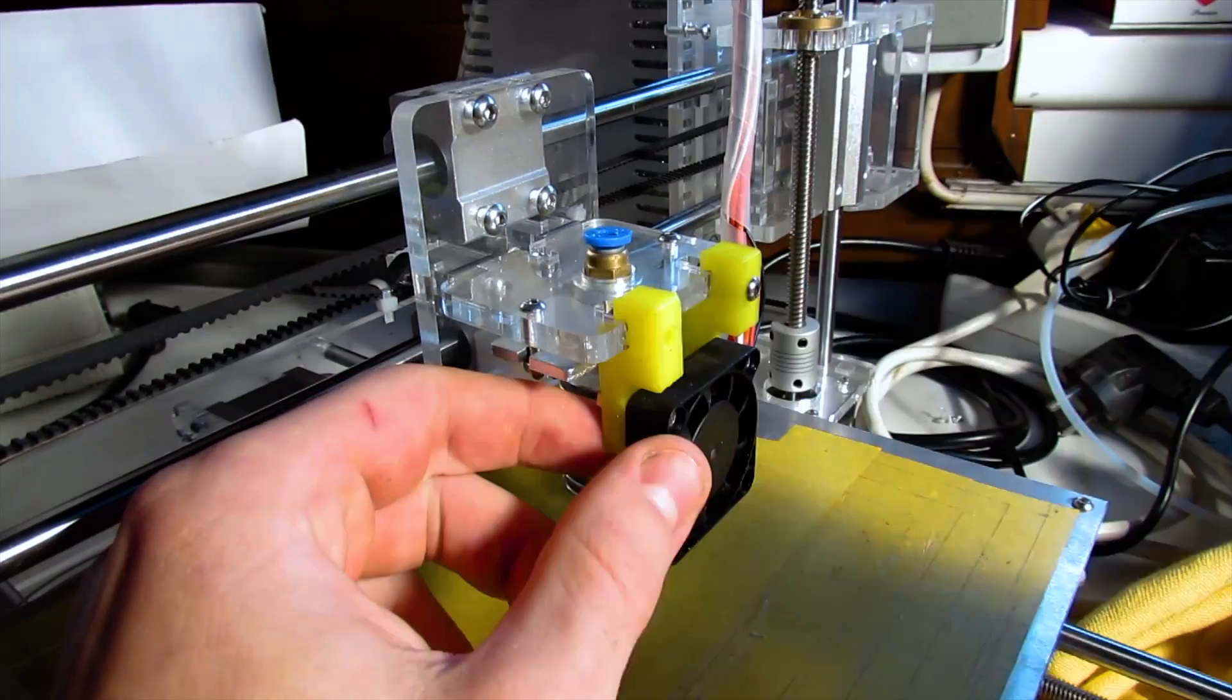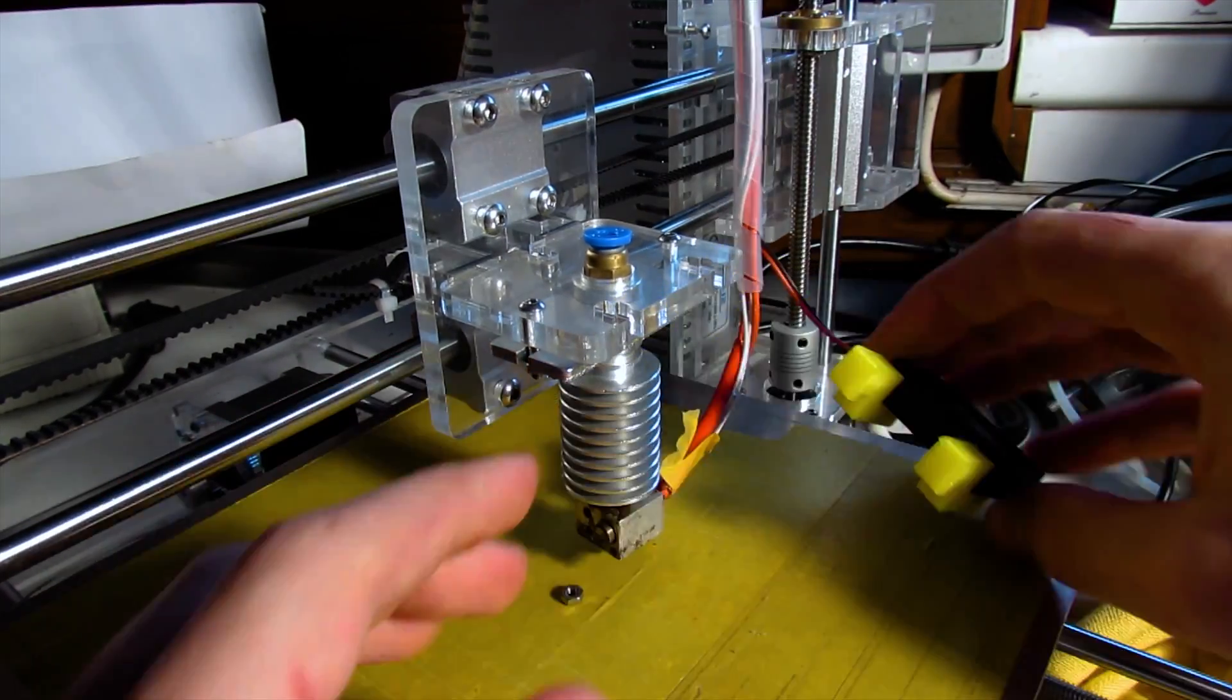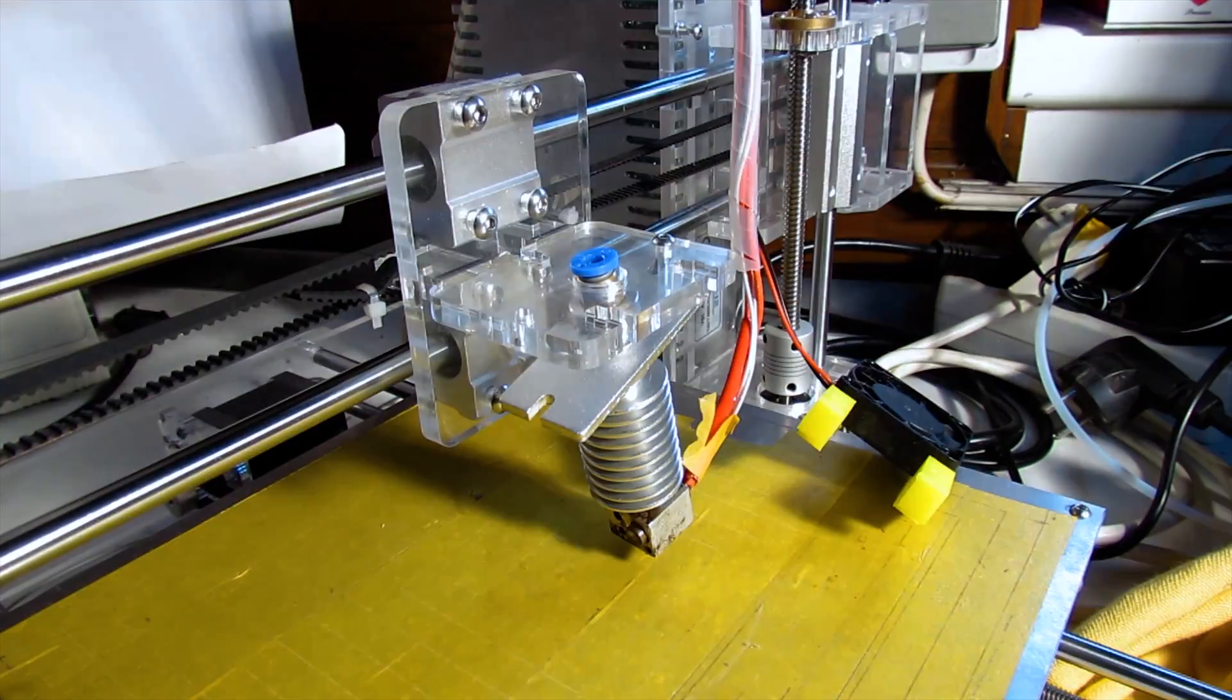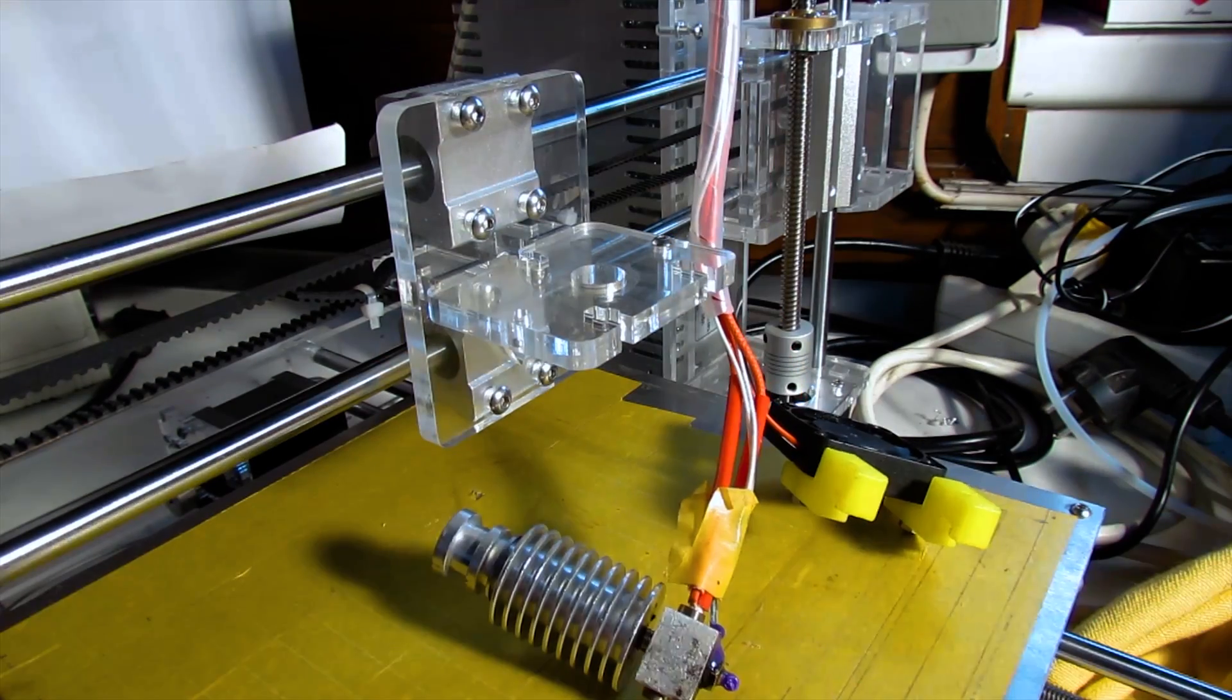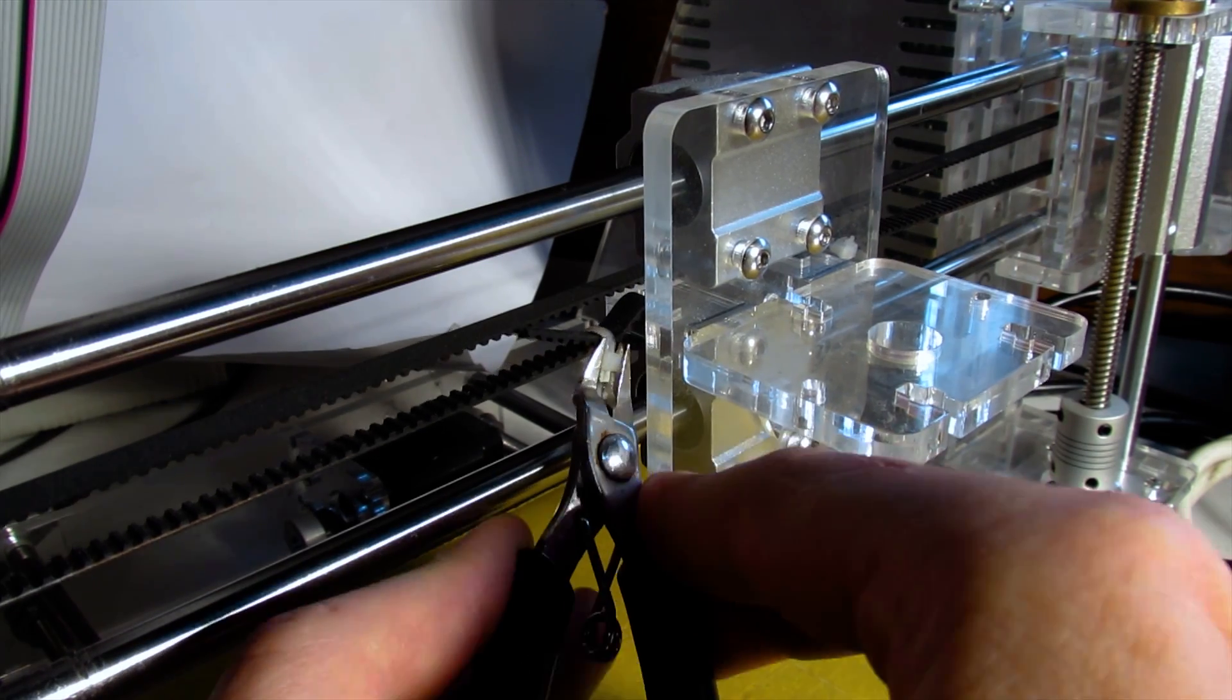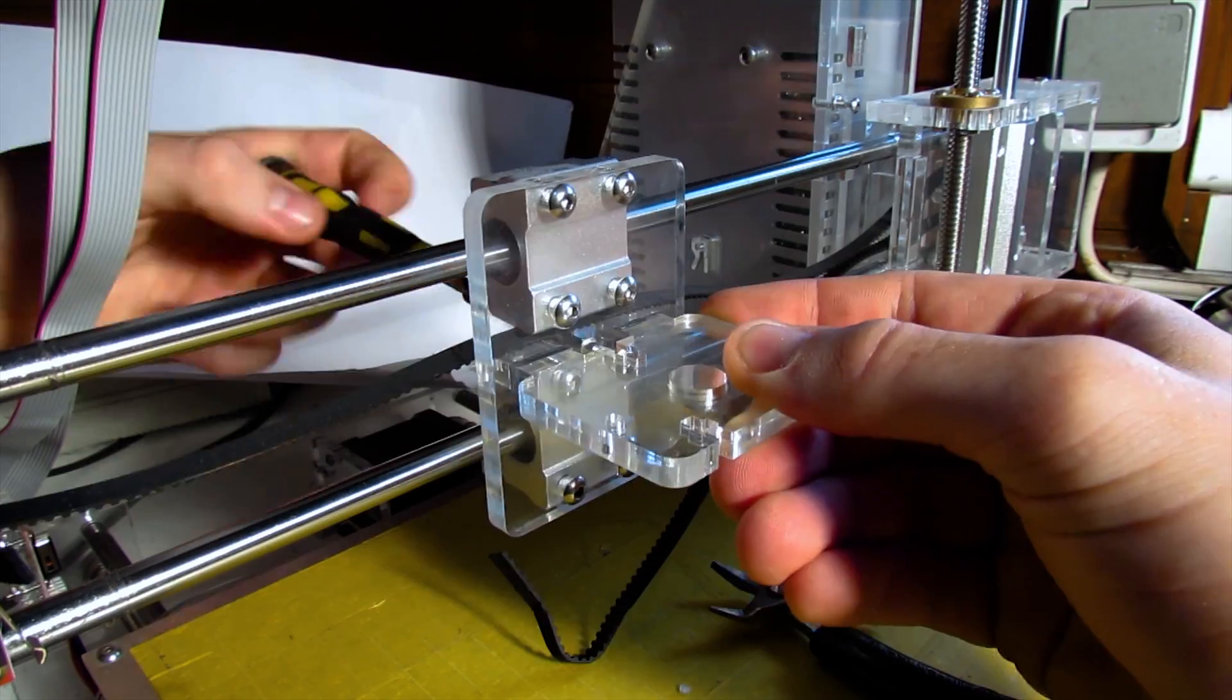I detached the fan and extruder and removed the main holder so I can drill two holes for the screws that are gonna secure the laser to the printer. By the way, all the links will be in the description below.